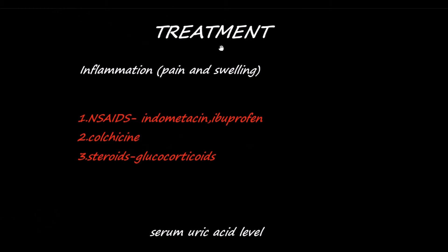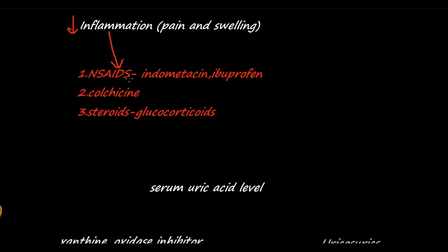According to treatment, the initial aim is to settle the symptoms of an acute attack. To decrease inflammation, NSAIDs are the first line of treatment — mostly indomethacin and ibuprofen. Colchicine is an alternative to NSAIDs. Steroids are also found to be as effective as NSAIDs.